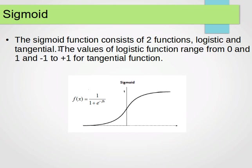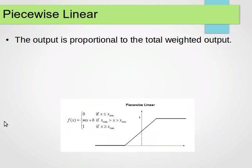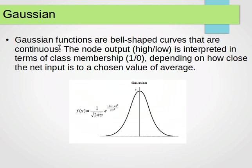Logistic and tangential. The values of logistic function range from 0 and 1, and the tangential function, the values range from minus 1 plus 1. And then we have a piecewise linear function, where the output is proportional to the total weighted output, and then we have a Gaussian function. I just wanted you to know about this.